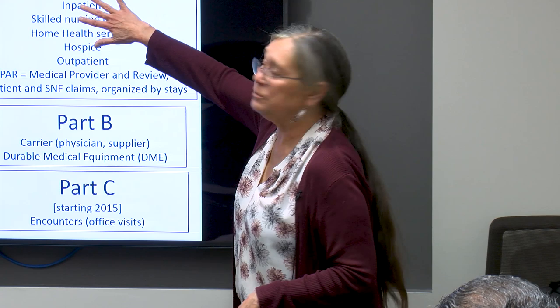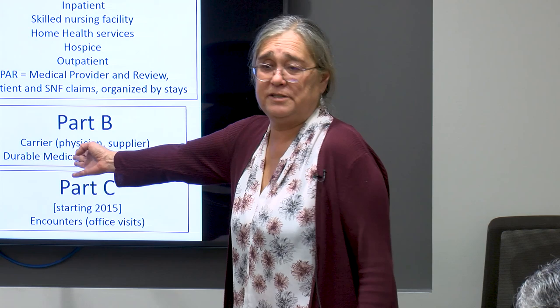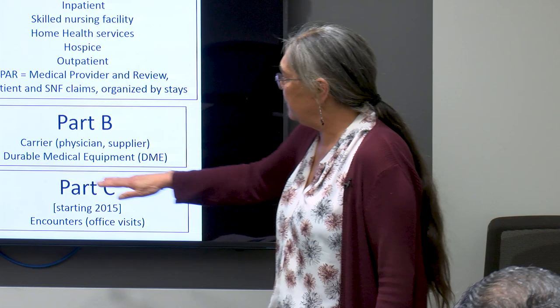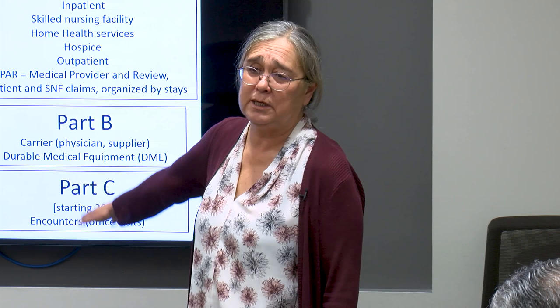Part B has a carrier file, which includes physicians and is called the physician supplier file — mostly physician office visits. There's also a durable medical equipment file, which includes walkers and wheelchairs and that kind of thing, but it also includes Part B drugs — drugs administered in the office — which sometimes show up in the carrier file but a lot of them show up in the DME file.